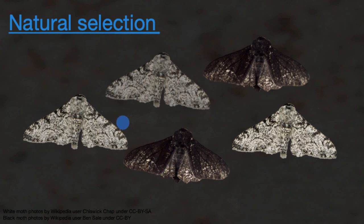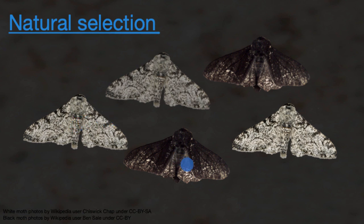What you had happening generation after generation is variation in the moth color, but as the background environment became darker, the ones that were white colored were easier to pick off by predators. And if they're picked off by a predator, they're definitely not reproducing and passing on their genes. The ones that were able to survive and pass on their genes were the darker moths.